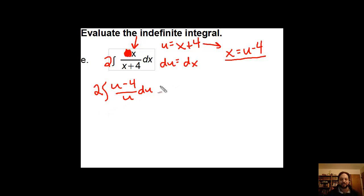This I can split up. I'm going to split this up into 2 times the integral of u divided by u, which just leaves me 1 du, minus, I'm going to move the 4 out front here, leaving me with the integral of 1 over u du.